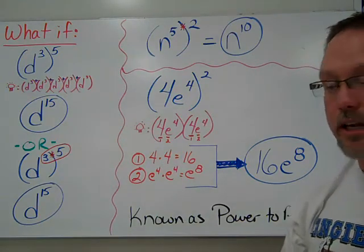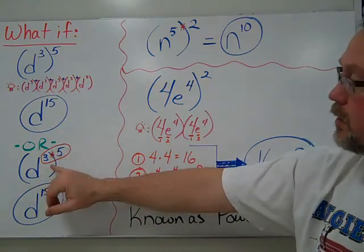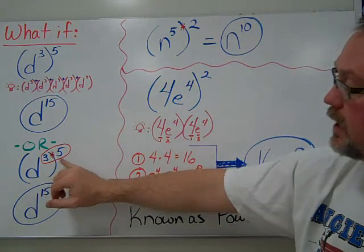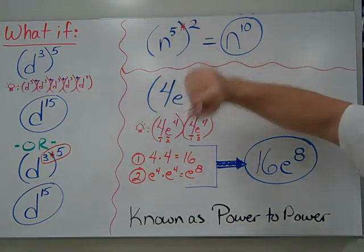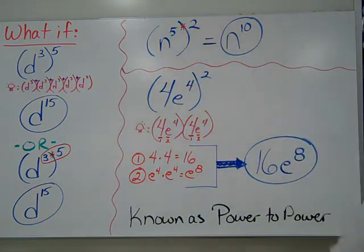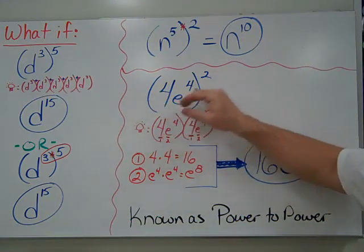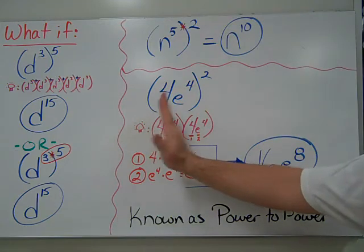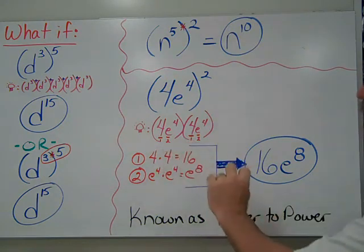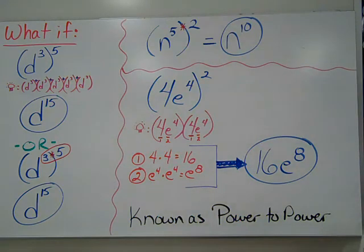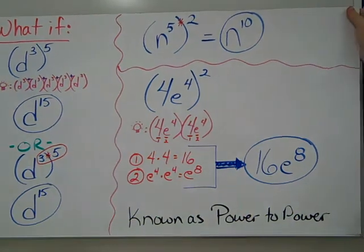The shortcut — which I'd recommend — is when you see a power raised to a power, just multiply the inside power times the outside power. That gives us d to the 15th. For n to the fifth squared: 5 times 2 = n to the tenth. If there's a number in front, like (4e⁴)², square the 4 to get 16 and multiply the exponents: e to the eighth. Answer: 16e to the eighth. This is called power to a power.